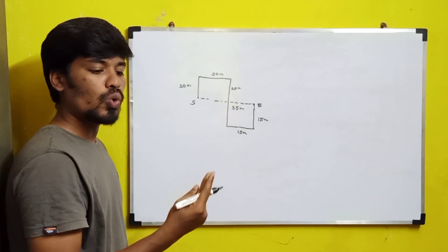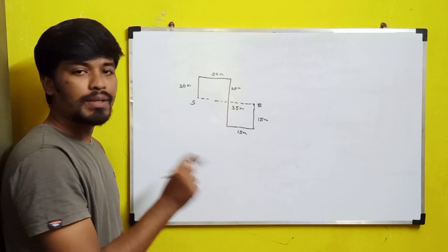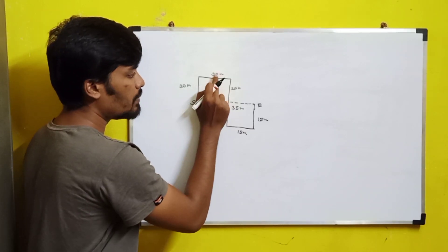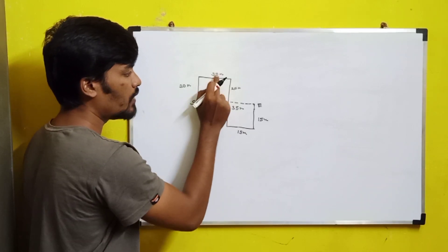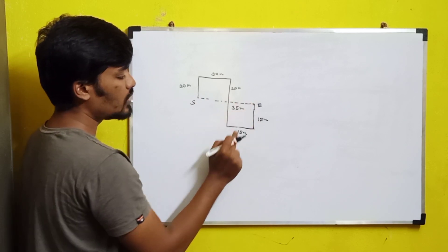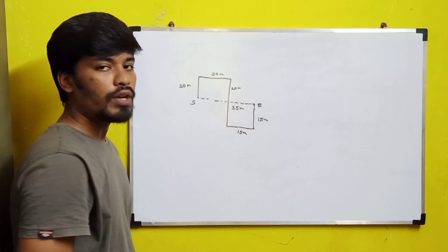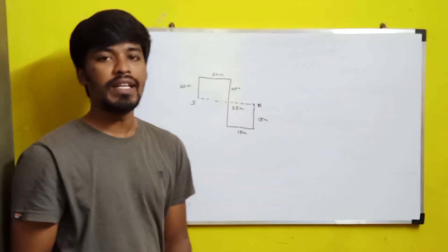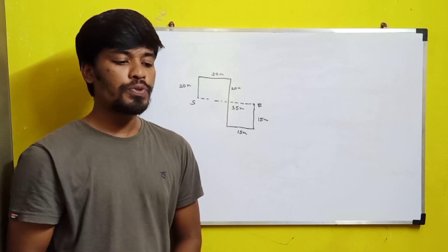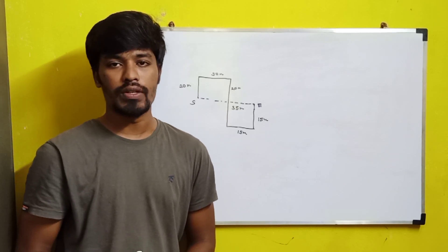East direction — there are two options and we have to identify the meters. This distance is going to be 30 meters, and this length is going to be 15 meters. So totally 45 meters east he is from the starting position. Option D is the correct answer for the first question.